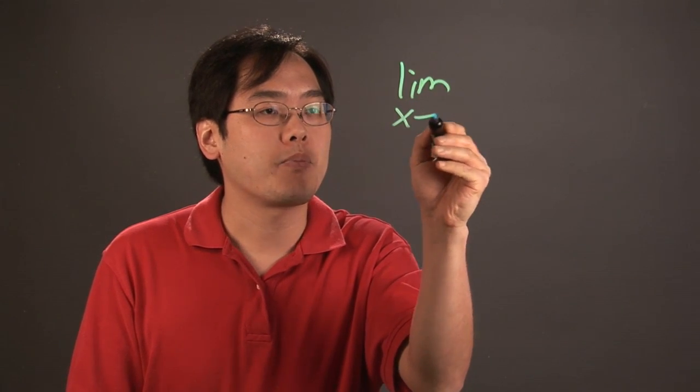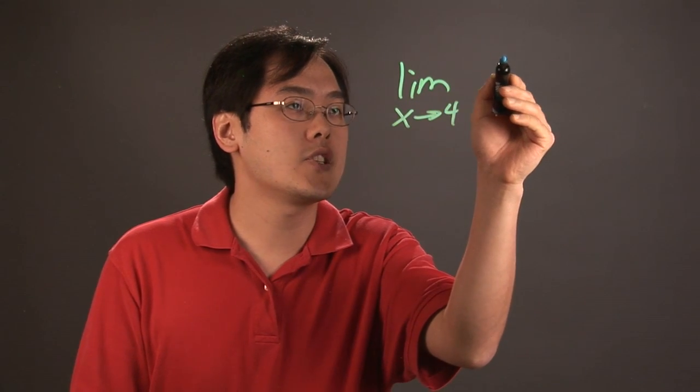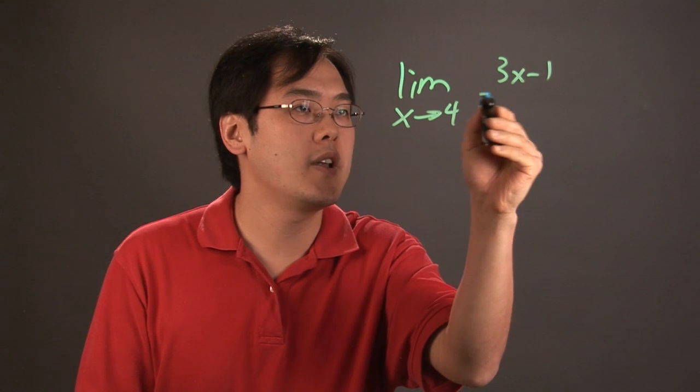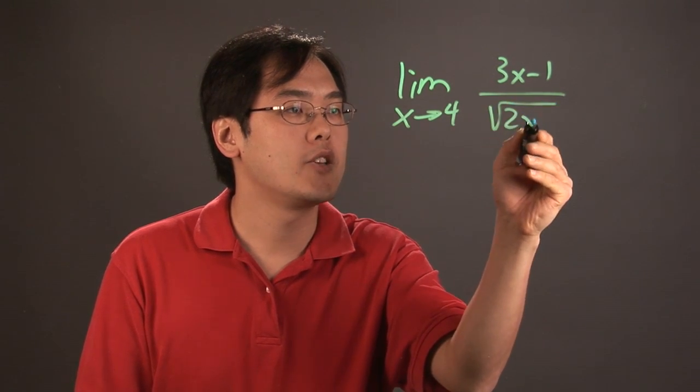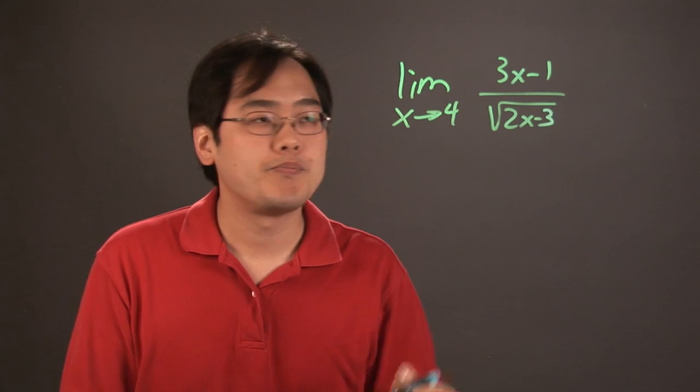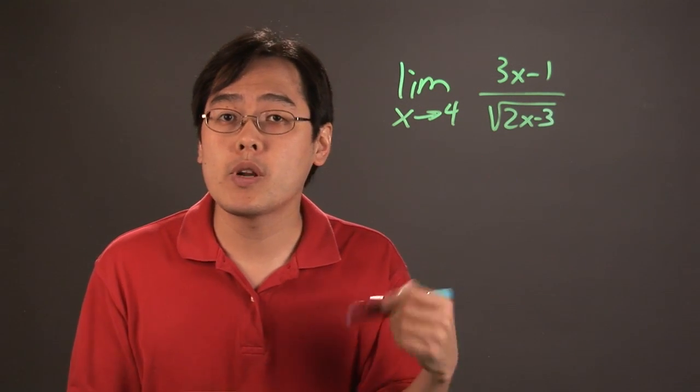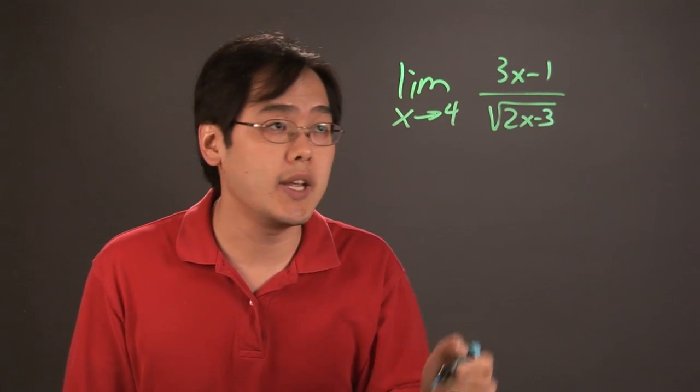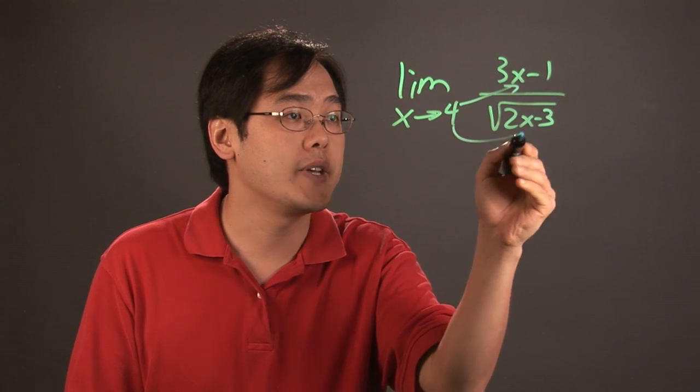Suppose you want to find the limit as x approaches 4 of, let's just say, 3x minus 1 over the square root of 2x minus 3. Now, if you want to find the limit as x approaches 4, one of the things that you want to consider is can you plug it in?